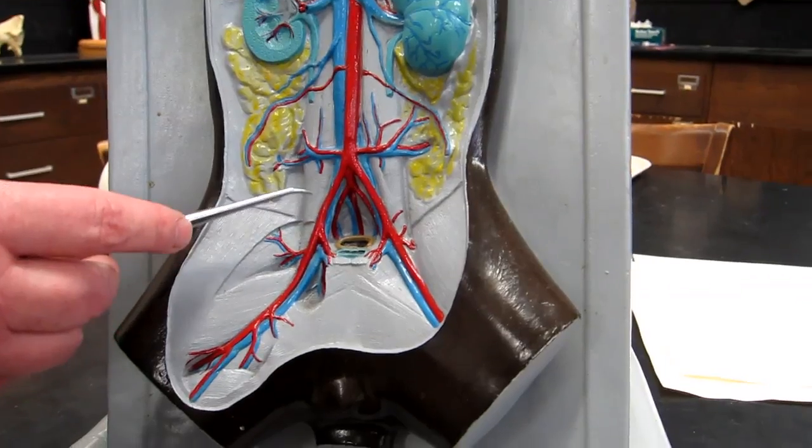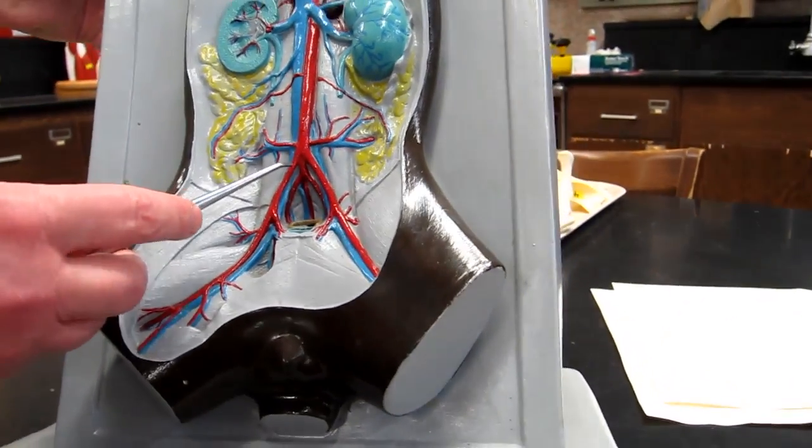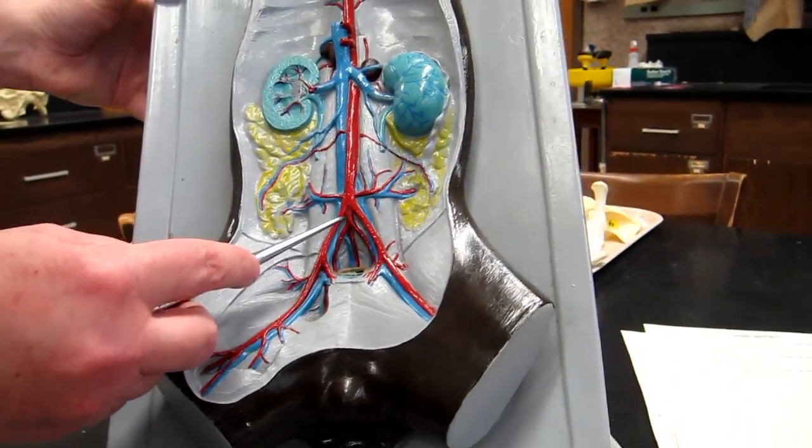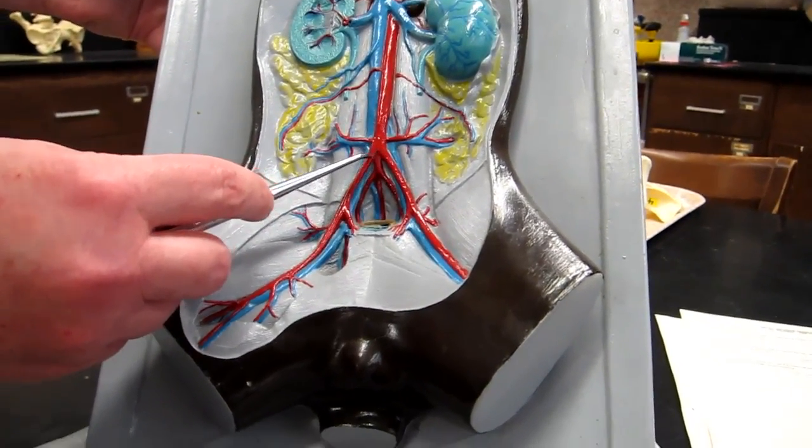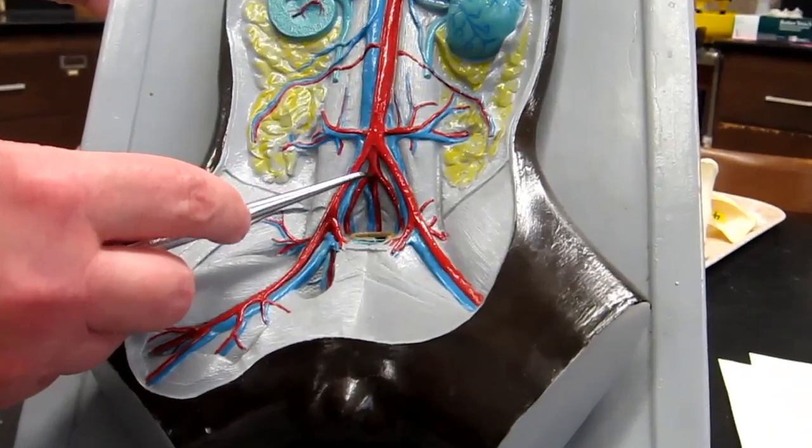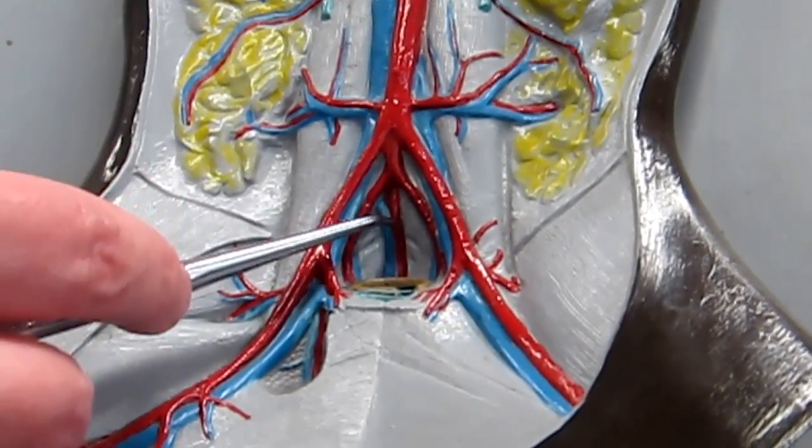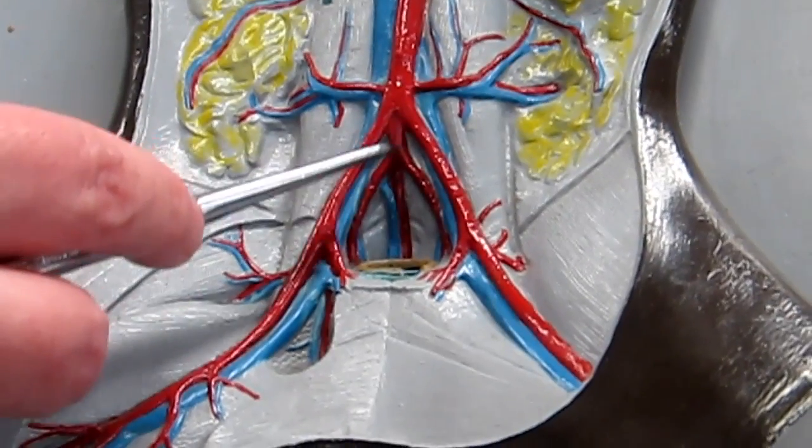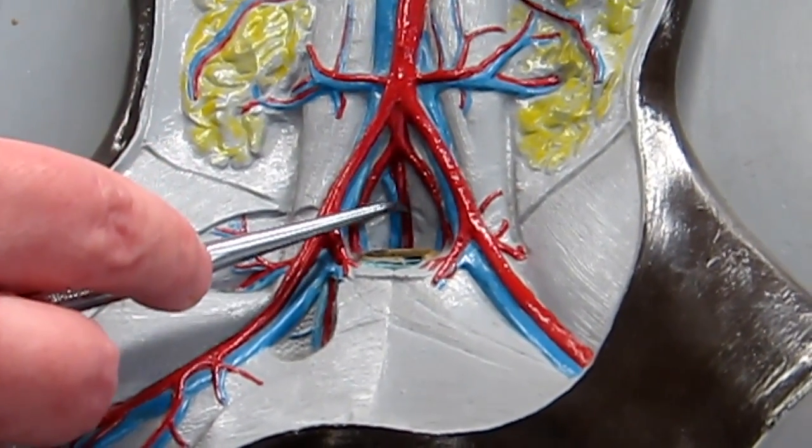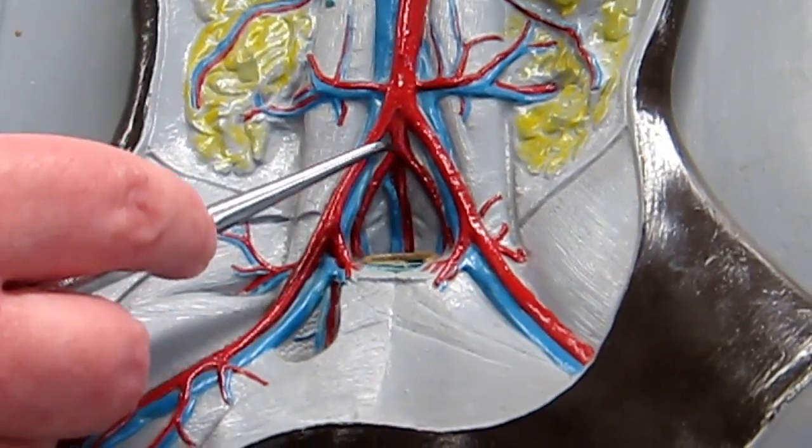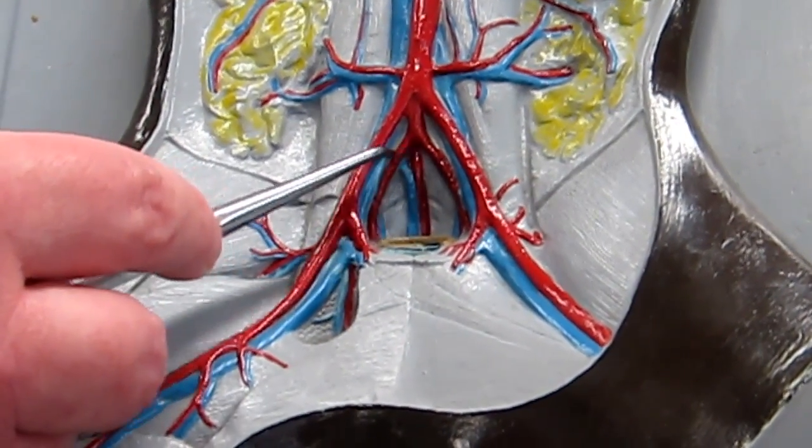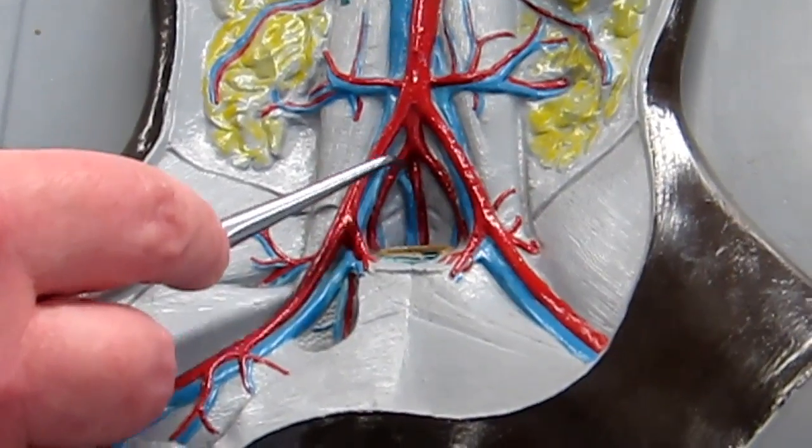And then you can see that there's a third branch that's heading medially away from the descending aorta. And that is the sacral artery. And that is dividing to give rise to the internal iliacs.